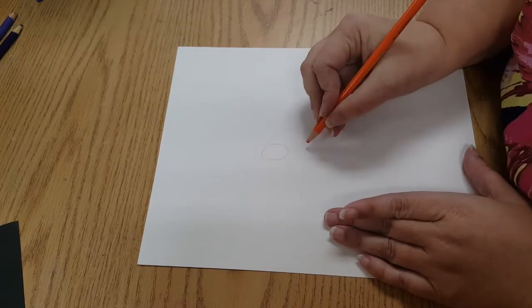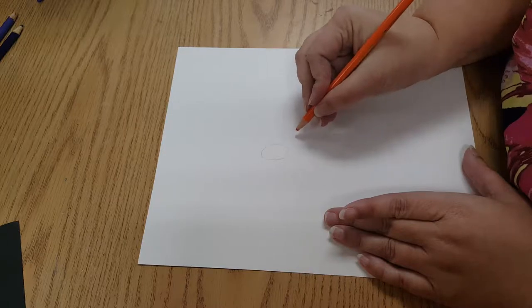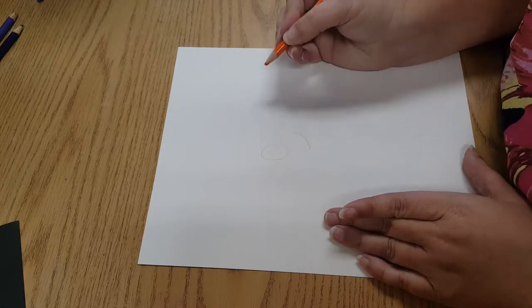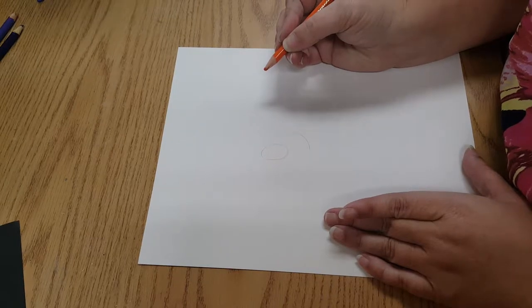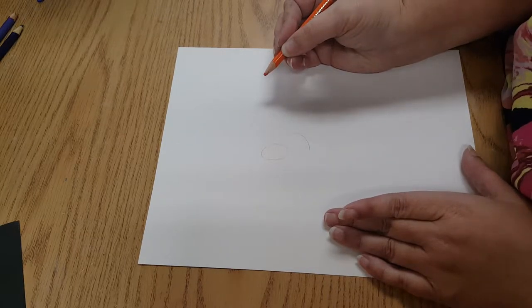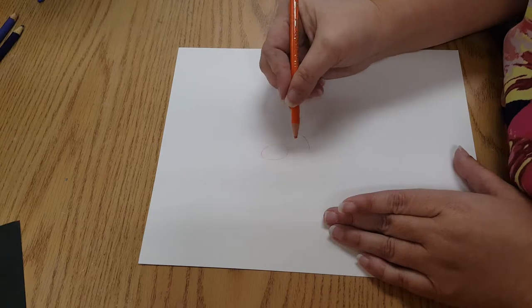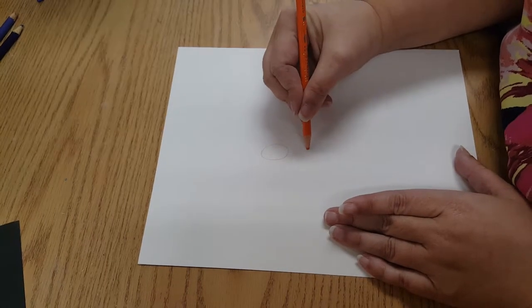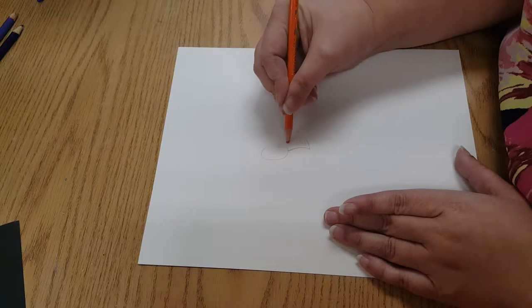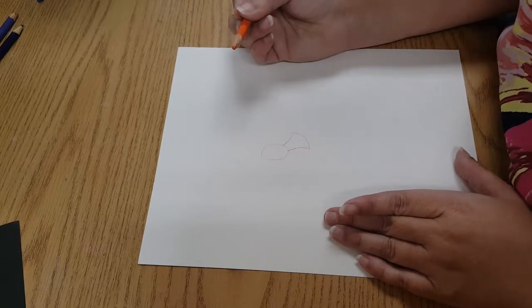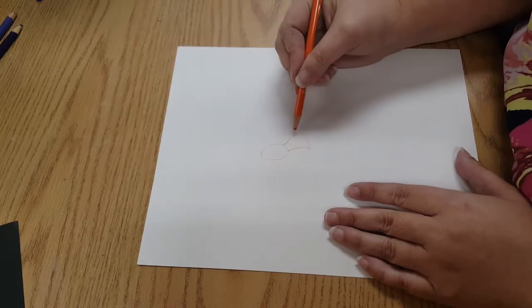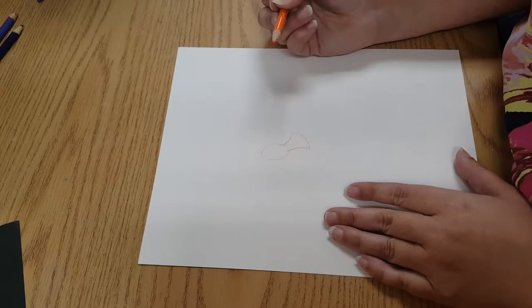And then down below the circle and kind of to the right, I'm going to make just a little arc or parentheses, basically. Hopefully you can see that. I'm going to connect the two with lines that are curving inward. So I'm going to do this and this. So what I've got right now is her head, her neck, and just the top of her chest. This shows above her shirt.